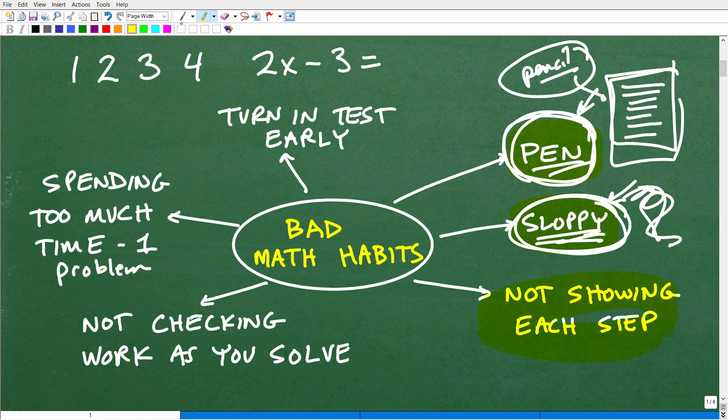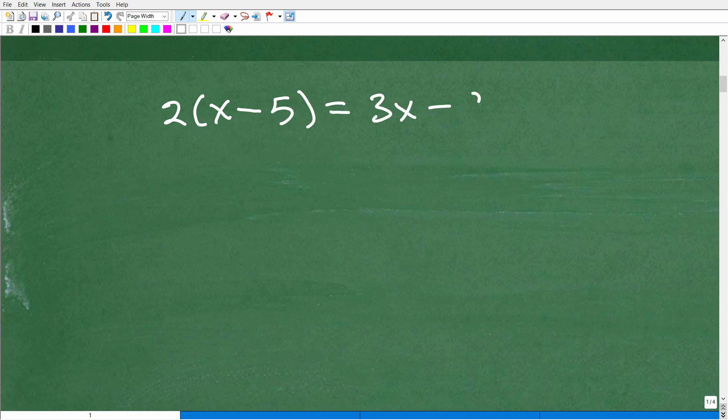All right, the next thing is you're not showing each step. So let's just take a look at an example, something like this. Let's say I had 2(x - 5) = 3x - 9, something like that. And let's say you just went 2x = 8, x = 4. Let's say you just wrote your work this way. Well, there's a whole bunch of steps in here that you're not writing. And most teachers, if you don't show the full work, this is the evidence that you know what you're doing. They're like, okay, they did this step correctly. They did this right.